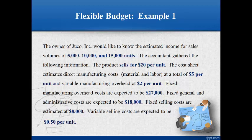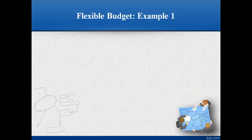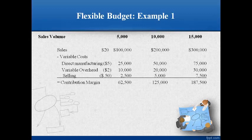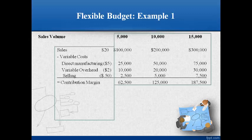Let's work through an example of how to prepare a flexible budget. Take a moment to read through the information gathered by the accountant. Notice the sales and variable costs are stated in per unit amounts and fixed costs are stated in total amounts. The first step is to write the units across the top, then format the variable cost income statement on the left. Begin with sales less all variable costs equals the contribution margin. Write the dollar amount per unit beside the description of the variable cost. Multiply the quantity of units by the amount per unit to get the total dollar amount for sales and each variable cost.